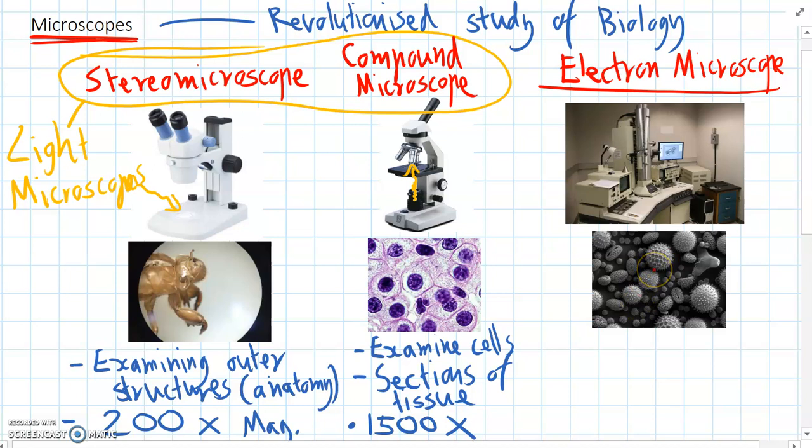And then a computer actually detects what happens to the electrons. So we actually don't look through it. We just get a computer image at the end.